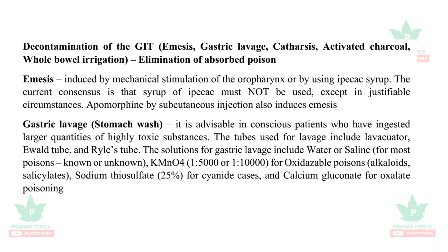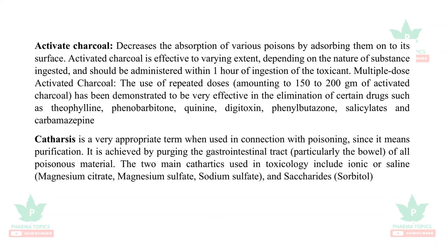Emesis is caused by mechanical stimulation of the oropharynx or by using ipecac syrup. Gastric lavage (stomach wash) uses water or saline, potassium permanganate for oxidizable poisons, sodium thiosulphate for cyanide cases, and calcium gluconate for oxalate poisoning. Multiple dose activated charcoal is very effective when given within one hour of ingestion of the toxicant; if it exceeds five to six hours, it is not useful. Catharsis means purification — achieved by purging the gastrointestinal contents. The two main cathartics used in toxicology are ionic or saline cathartics (magnesium citrate, magnesium sulfate) and saccharide cathartics (sorbitol).